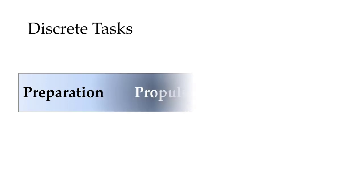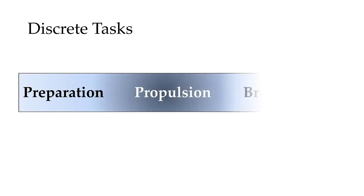We have a preparatory phase, a propulsion phase, and a braking phase. The preparation phase, as the name implies, gets the body in the proper position to generate as much energy as it can during the propulsion phase. The propulsion phase is where energy is being generated in order to complete the task. With the braking phase, we would be absorbing any energy that's left in the body after the propulsion phase.